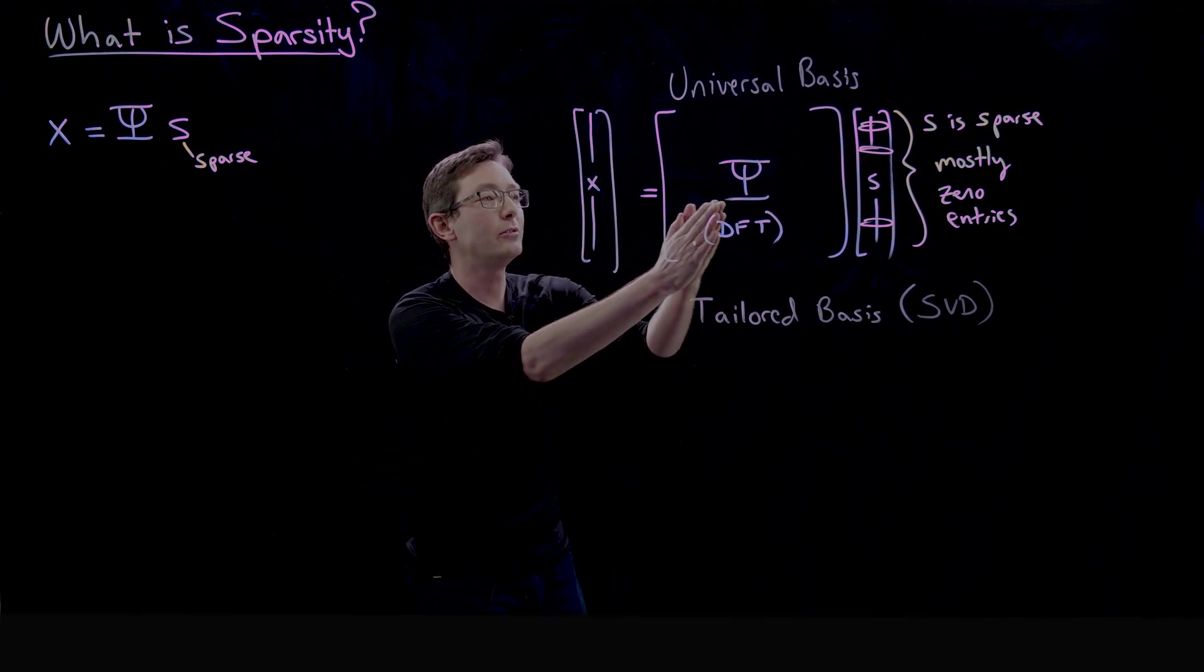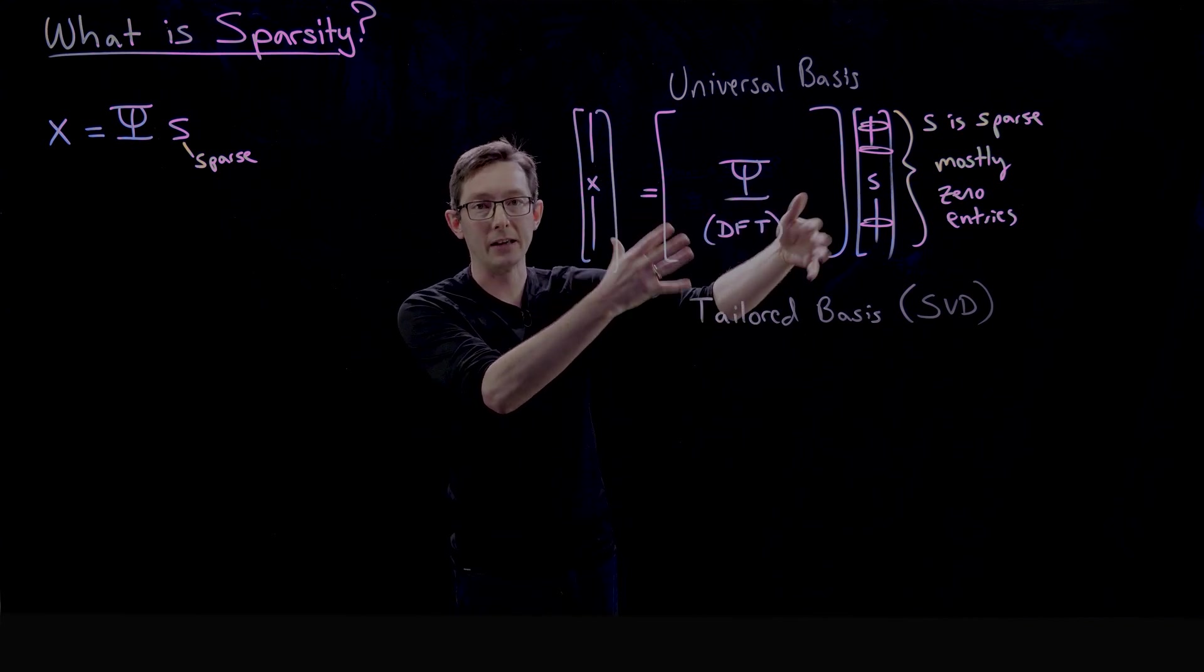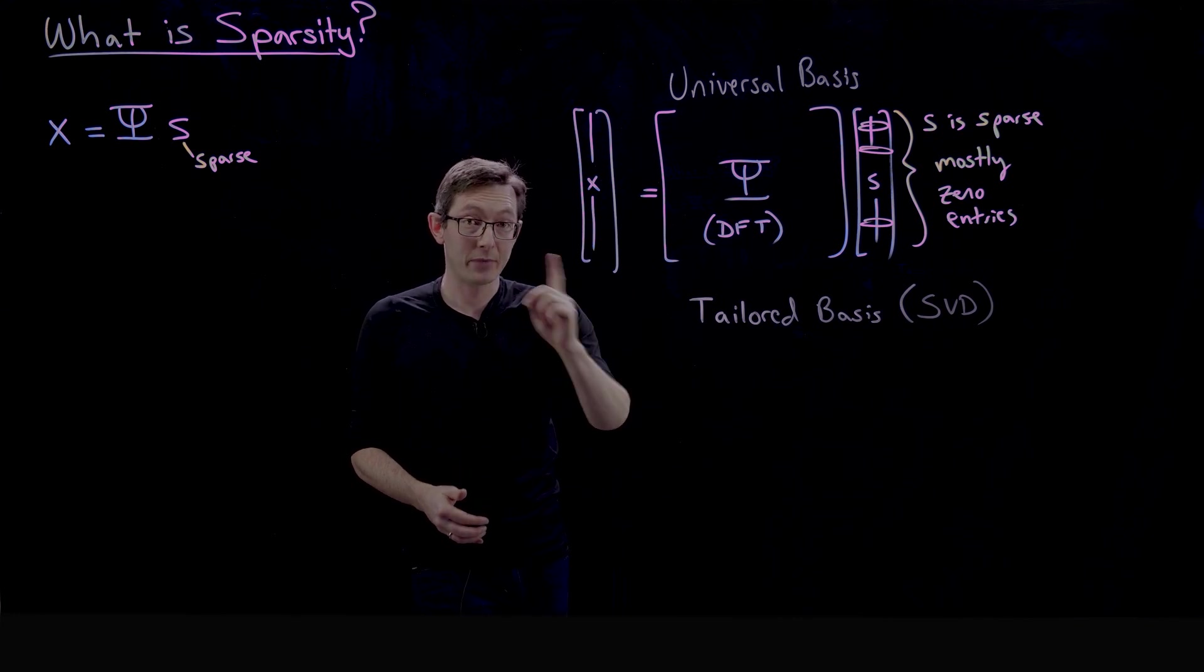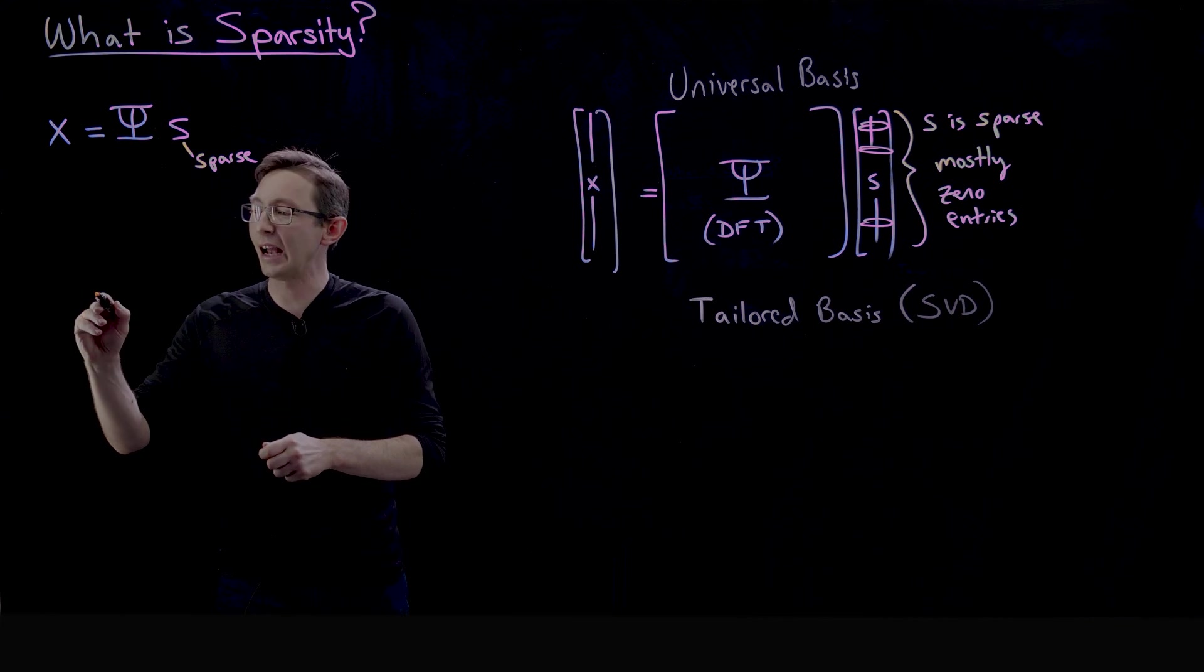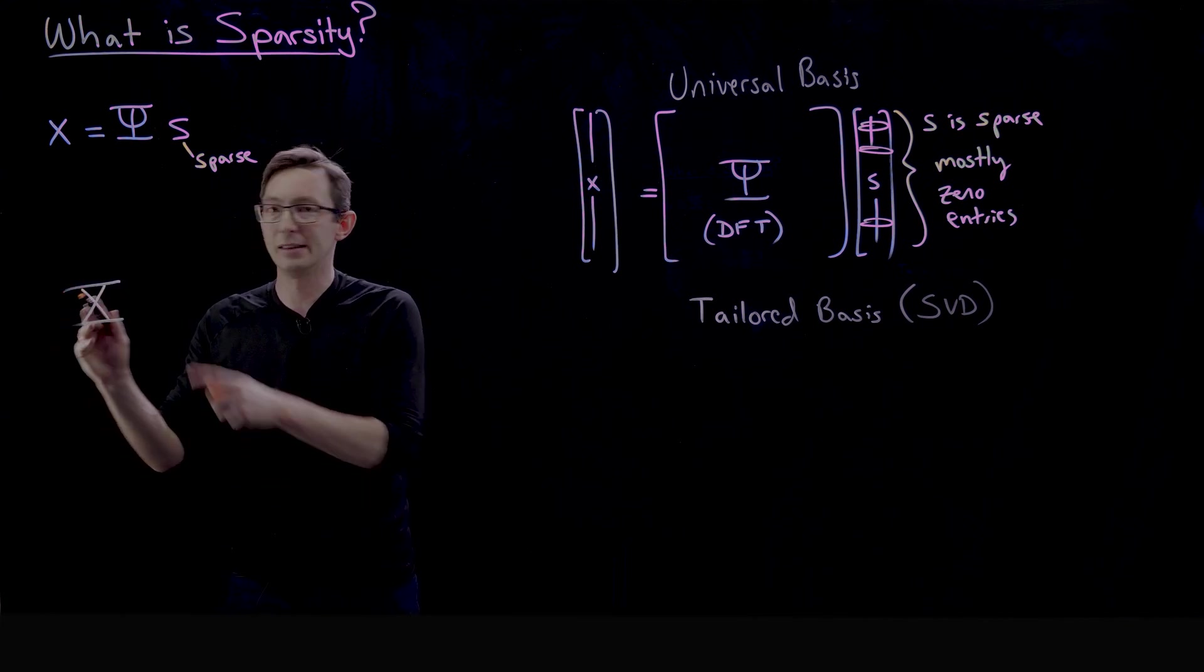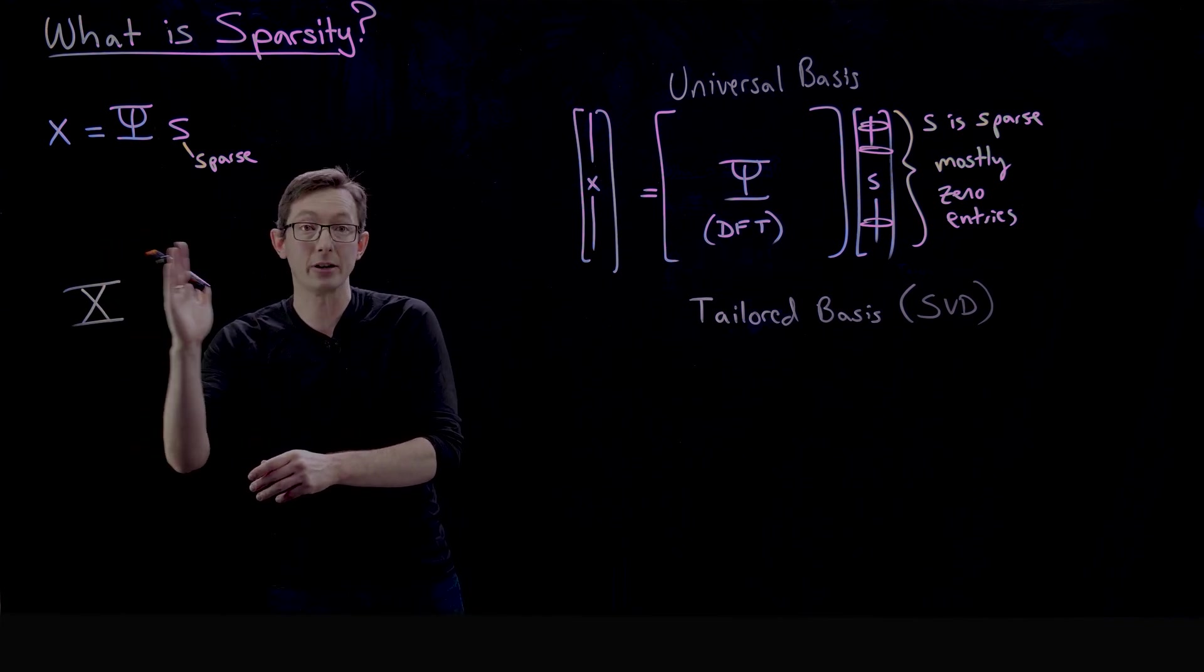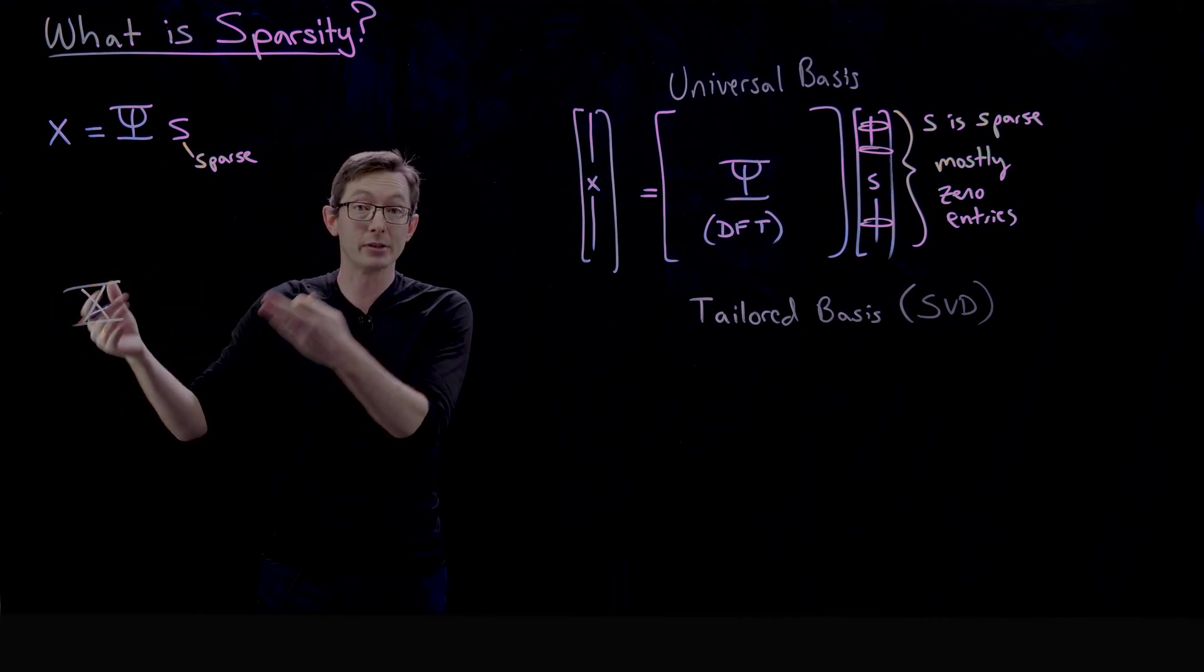I don't need all of these degrees of freedom that could possibly encode coffee cups and mountains and other things. If I know that X is a human face, then what I can do is I can build a big library of human faces. And this big matrix X, so each column will be a different human face—maybe I have thousands, maybe this is the Facebook library and I have millions of examples of human faces.